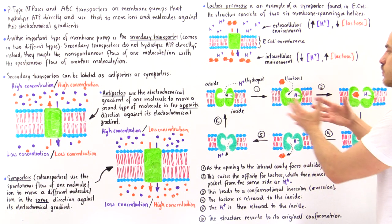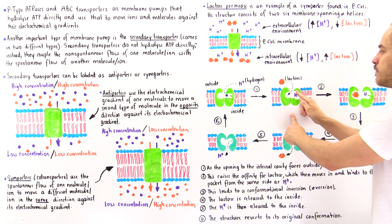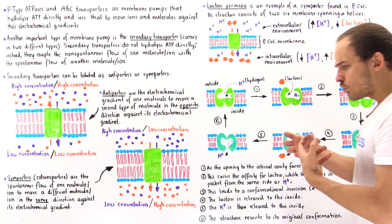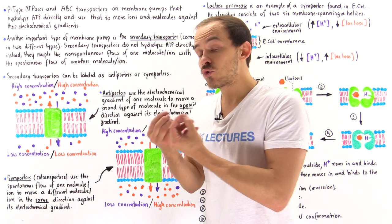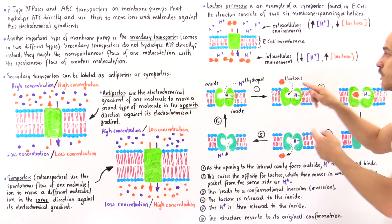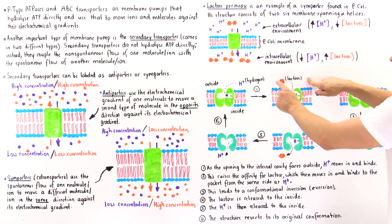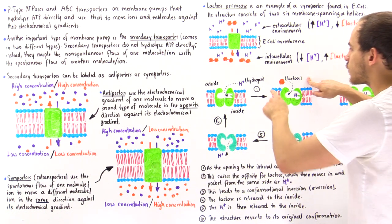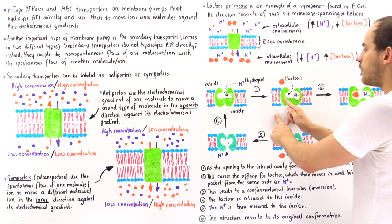Now we move on to the next state. The proton is bound, and by binding, it creates a change that increases the affinity of this pocket for lactose or some other type of sugar. So the lactose, which is a disaccharide, moves into the pocket.